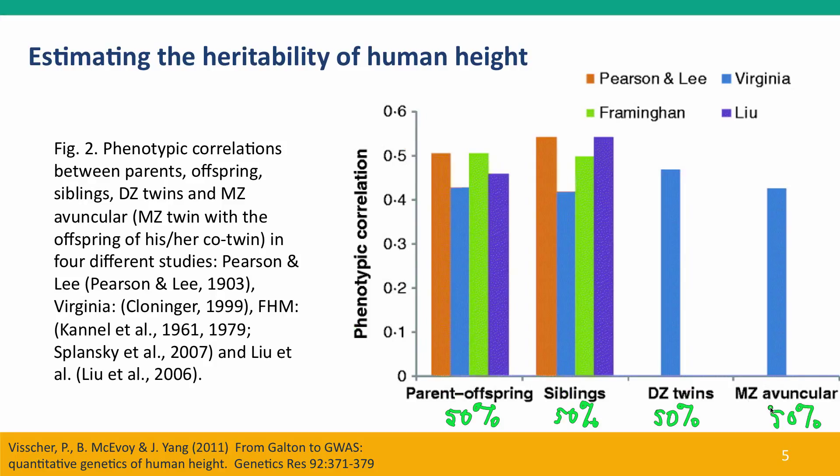This strongly supports the evidence that height is highly heritable — 75 to 80% heritable in humans.